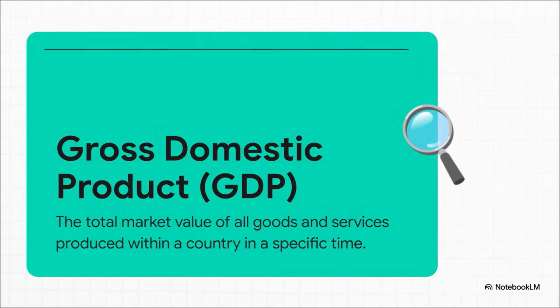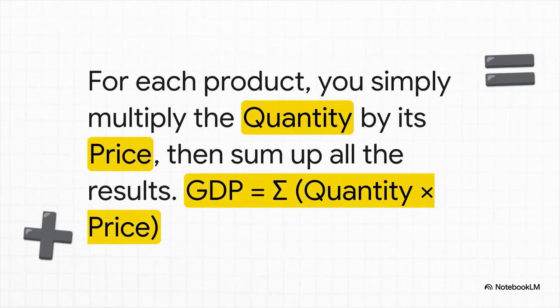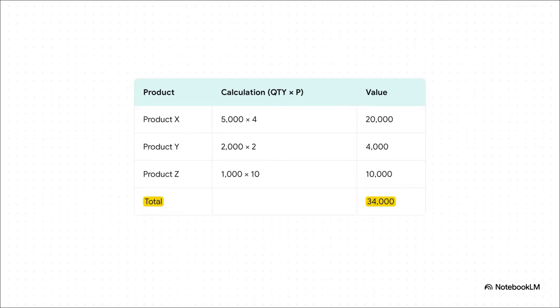Basically, it's just the total cash value of all the final stuff, all our X, Y, and Z that we produced in one year. And you know what? The math to figure this out is actually super simple. For every single product, you just multiply how much you made, the quantity, by its price. This formula might look a little fancy with that sigma symbol, but all that really means is add it all up.